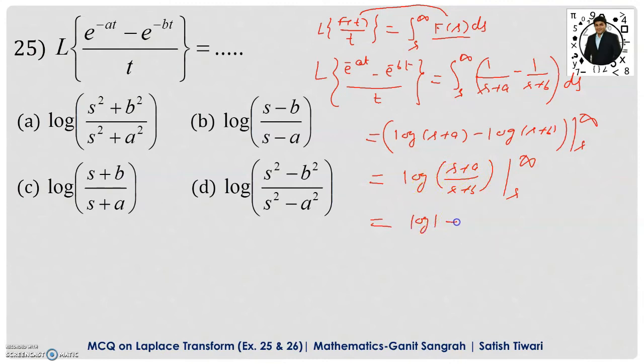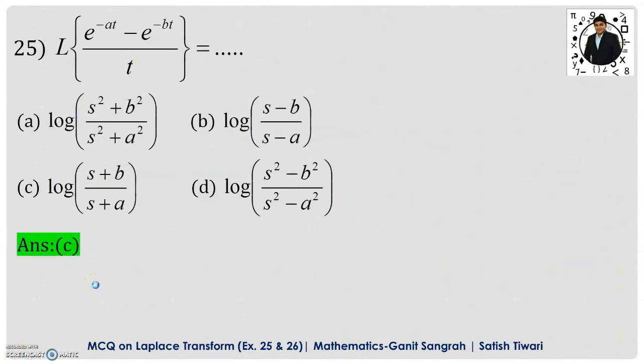So, if you put the infinity here, you get the log 1 which is zero. Now, put s in place of s. You will get the same function that is log of s plus a upon s plus b. Now, this is zero minus 1 I take into the power. So, this will become reciprocal. It will be the log of s plus b upon s plus a. I use here the logarithmic property. So, which one is the correct option? Please tell me. Yes, it is option c is correct option.